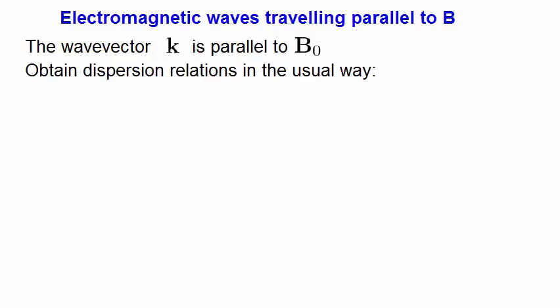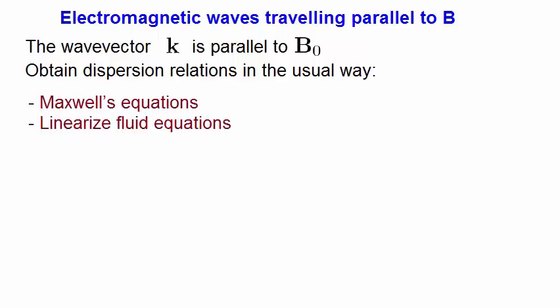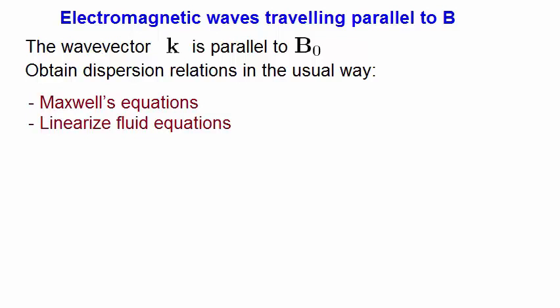Now let's get the dispersion relation for an electromagnetic wave that travels parallel to the applied magnetic field. So the wave vector k has to be parallel to B0. We go about obtaining the dispersion relation in the usual way. That is, we must first solve Maxwell's equations for this situation, and then linearize the fluid equations which would then be coupled to Maxwell's equations. We finally obtain two solutions to the dispersion relation, called an r-wave and an l-wave.